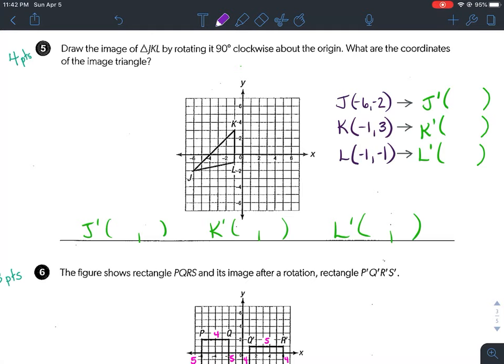One point for J prime, one point for K prime, one point for L prime, and then the fourth point will be for graphing J prime, K prime, L prime. So don't forget after you find the three prime points, don't forget to graph them.